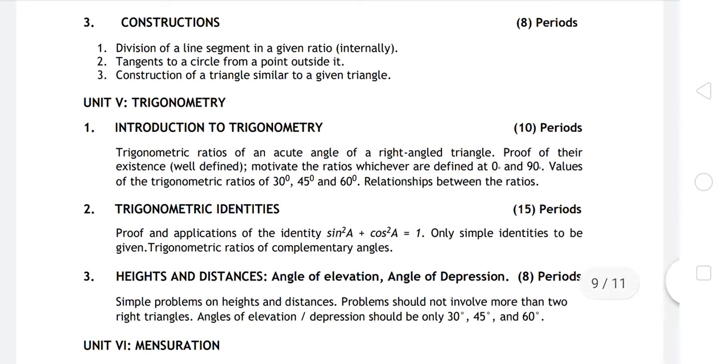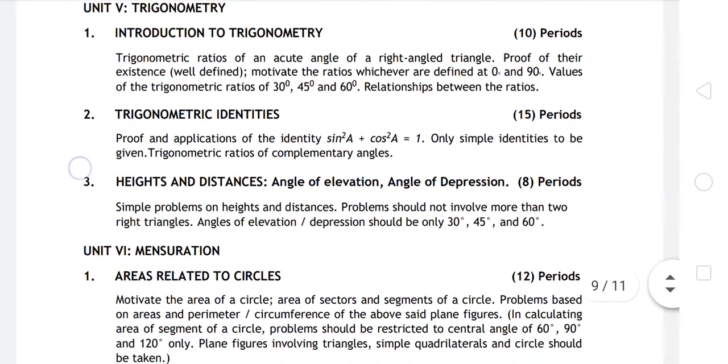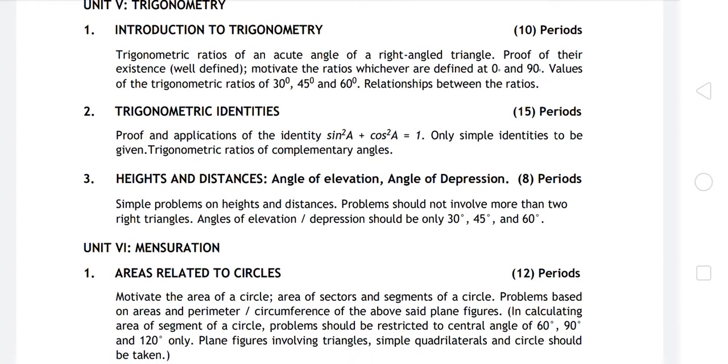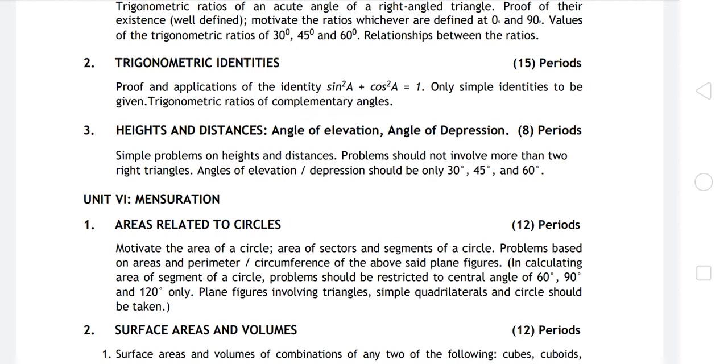Introduction to Trigonometry: trigonometry ratios of acute angle, right angle, proof of their existence, motivate the ratios. Last time some relationships between ratios were removed, this time they're added back. Full trigonometry chapter. Then Trigonometric Identities: proofs related to identities, complete.